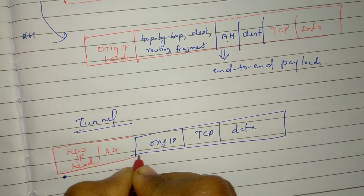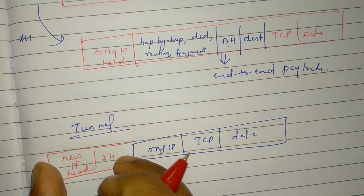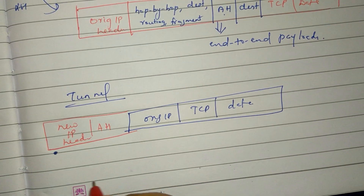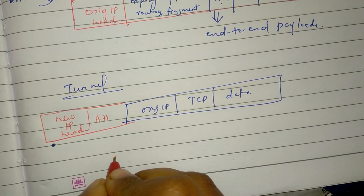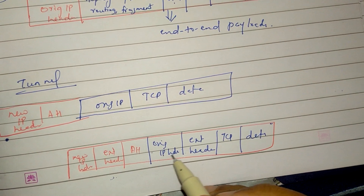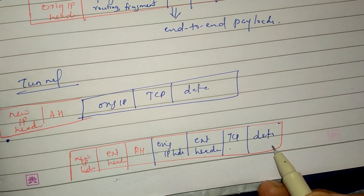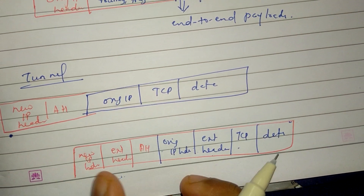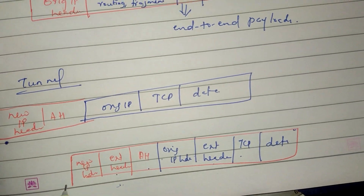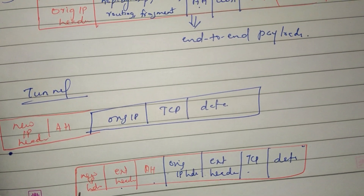For IPv4, we use the original IP header on the left side. For IPv6, the original IP header with extension headers, TCP, and data is on the left side. Then we add AH, extension header, and new IP header.